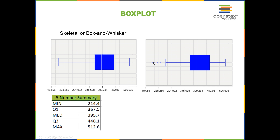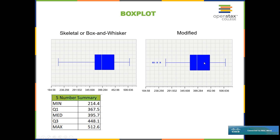If we want to show the outliers, we can use a different version called the modified box plot. Notice that the left whisker does not extend as far as before — instead it stops at the lowest value that is not an outlier, which was around 267. Any outliers are then shown with stars, dots, or x's depending on the technology you're using. The rest of the box plot looks the same; it was only the left whisker that was shortened so that outliers could be identified.